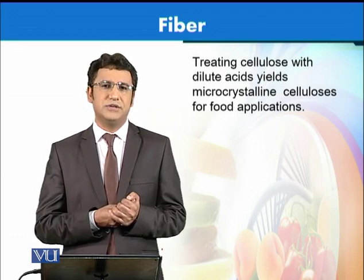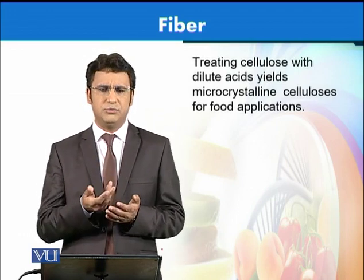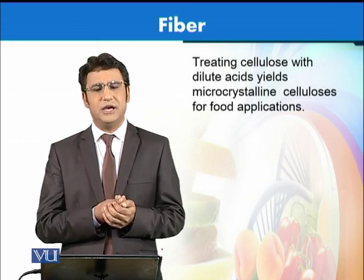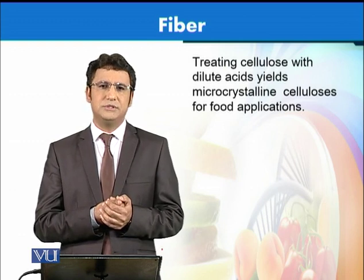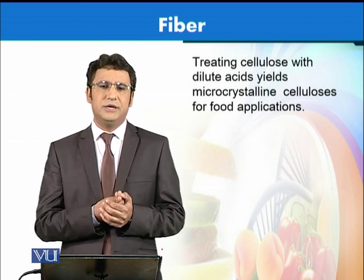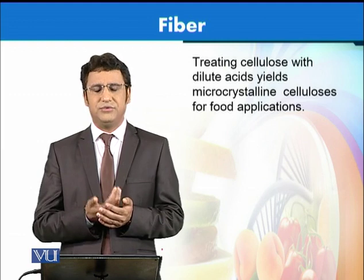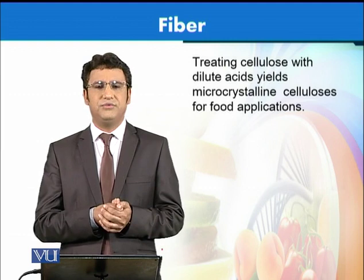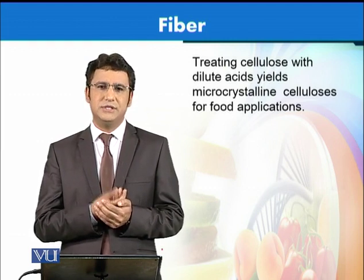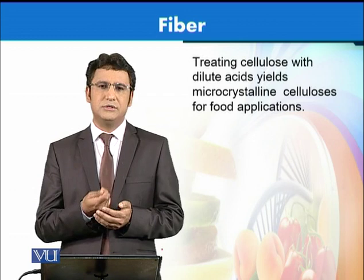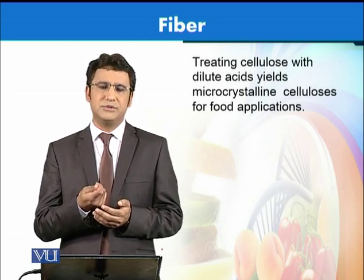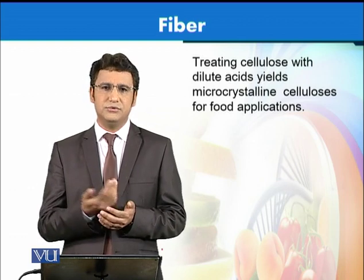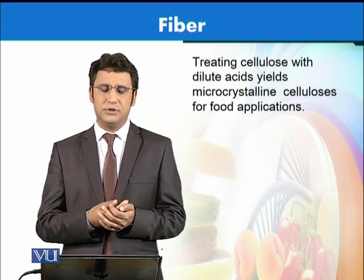If we treat cellulose with dilute acids, that would produce microcrystalline cellulose. Microcrystalline cellulose has very important applications — we add it to most food products to increase the bulk. As fibers are very important in human diet, they reduce the calorific value of food and increase the bulk. A lot of functional foods are added with cellulose in the form of microcrystalline structures to add value to those food products.